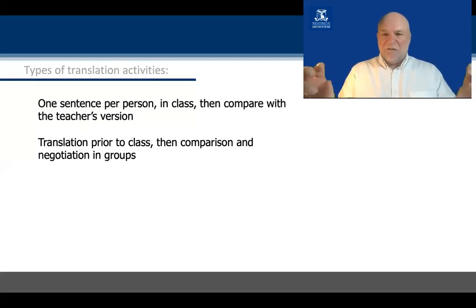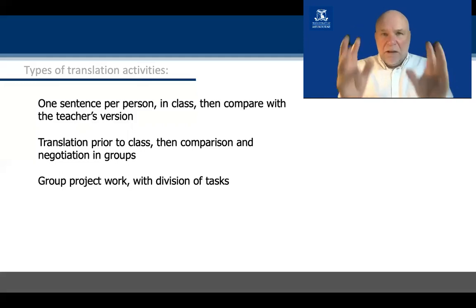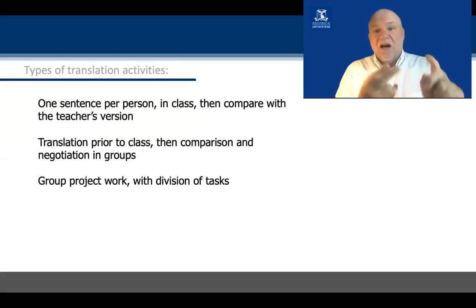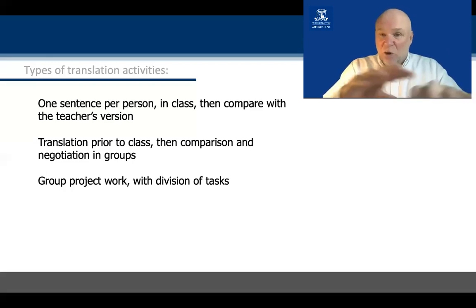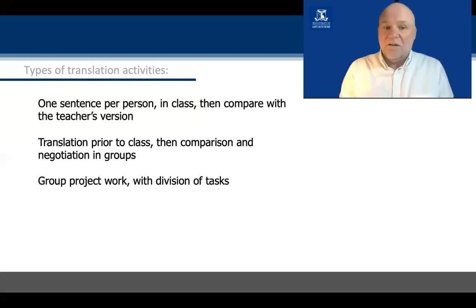We can get students to do translations prior to class, come to class, put them together and say you agree on a translation, discuss it in your small group and come up with a common translation. So students have to discuss it and agree and negotiate meaning actively in the groups. We can have projects where we have a big text to translate and different students do different parts of the text, or one person does the terminology, another does the layout and design, and another will be the project manager.